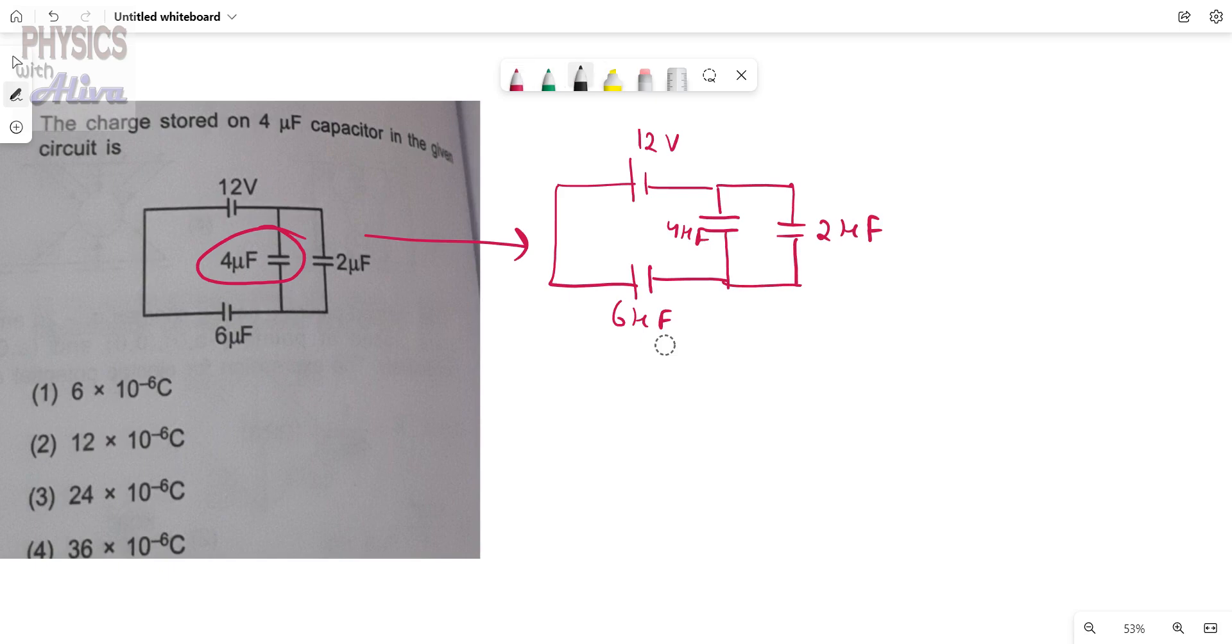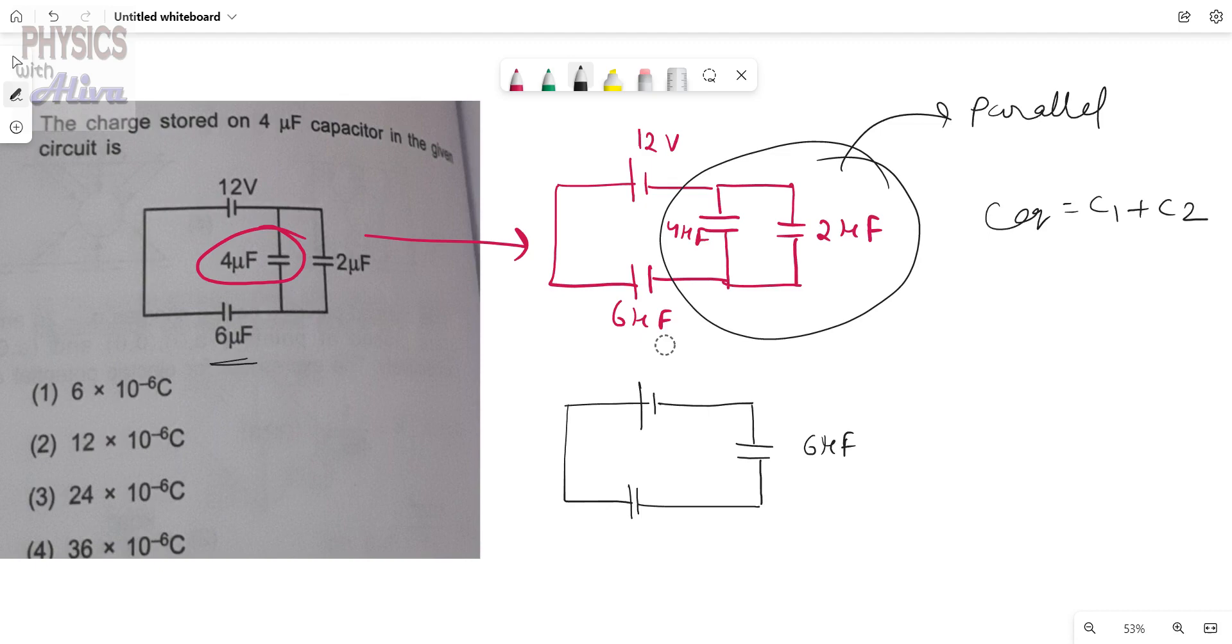From here we can see these two are in parallel combination. So we can draw this like this. These two are in parallel combination. We know C equivalent equals C1 plus C2 for parallel combination. So this should be 6uF, and this 6uF is given.